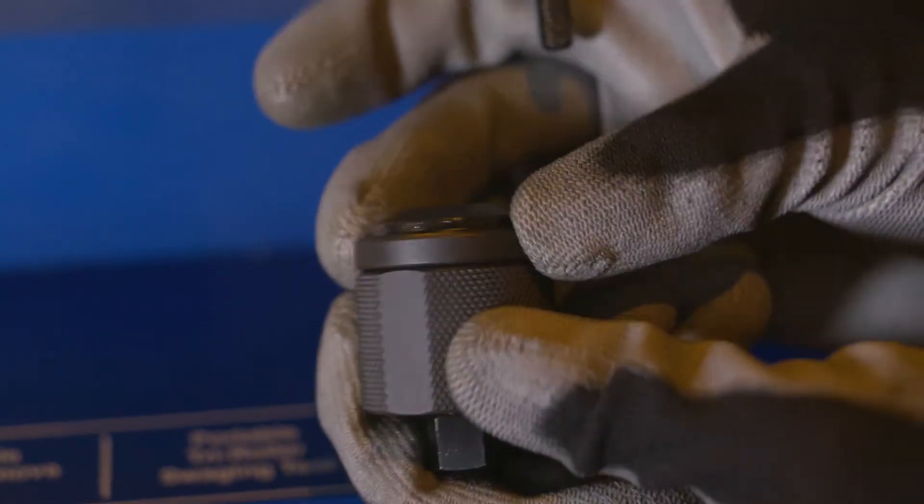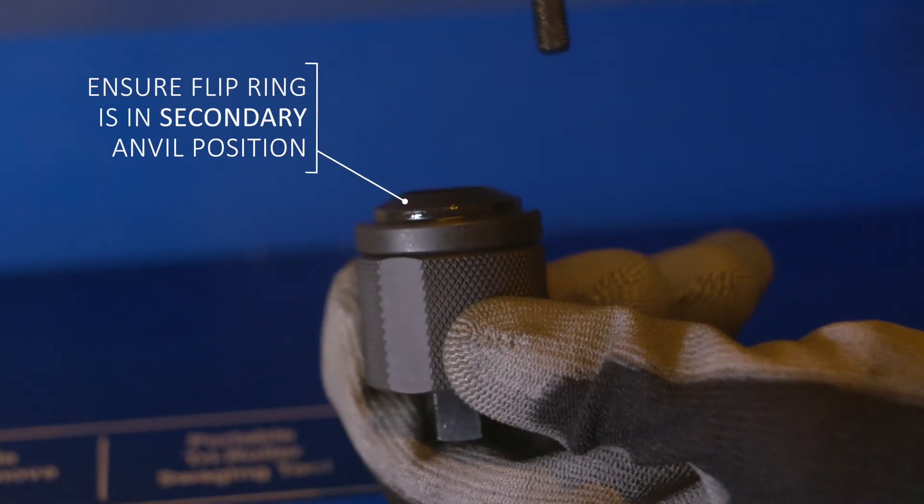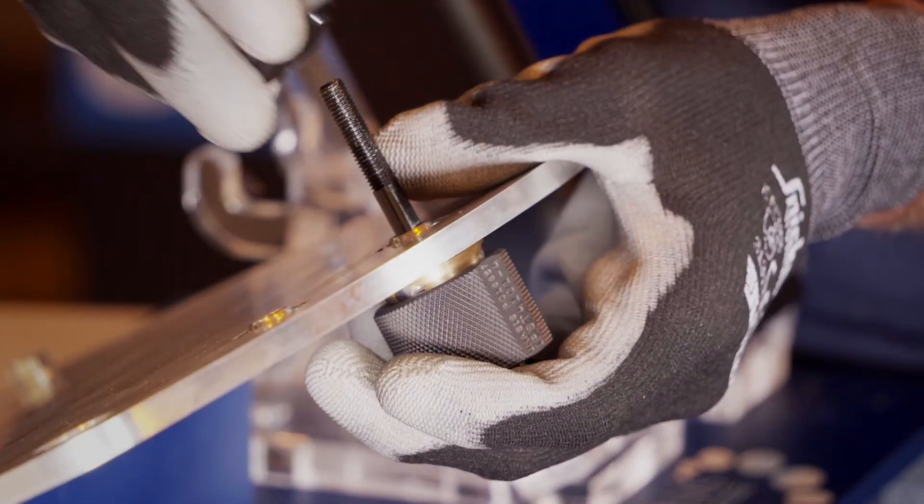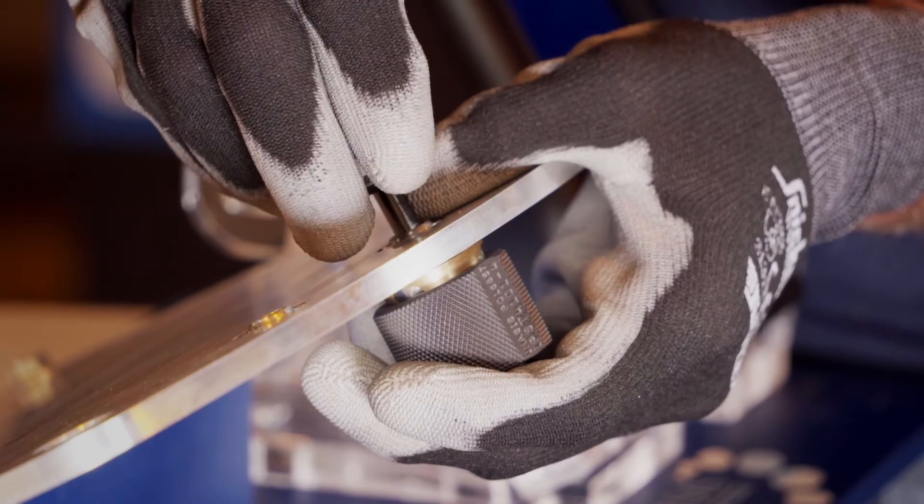Disassemble the tool and reassemble with the flip ring in the secondary anvil position, and the rollers in contact with the opposite side of the bearing. This will now be your secondary swage.